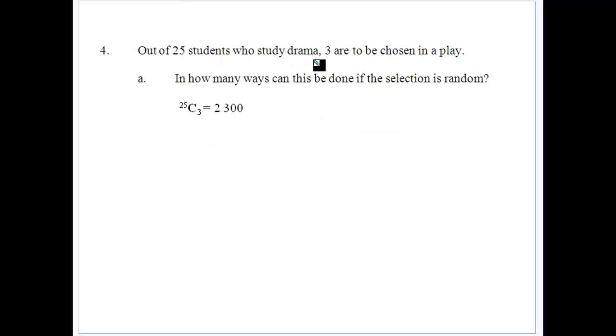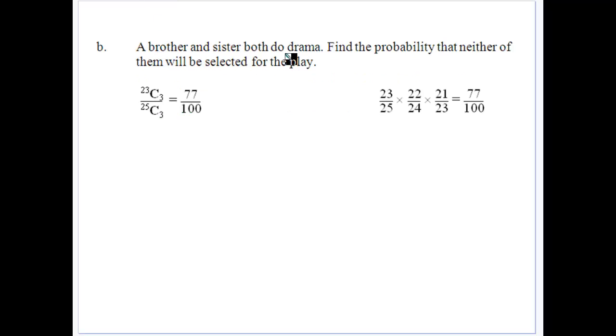This one we've got 25 students who studied drama and three to be chosen to play. How many ways can this be done at random? Well, we've got 25C3 because you're getting groups of three from 25. So 2,300 different ways we can get groups of three students. If a brother and sister both do drama, find the probability that neither of them will be selected for the play. Well, if neither of them are going to be selected, then you've got two basically out of the group. So how many groups of three can you get from the 23 remaining students over the total number of groups of 25C3?